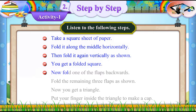Now fold one of the flaps backwards. Fold the remaining three flaps as shown. Now you get a triangle.